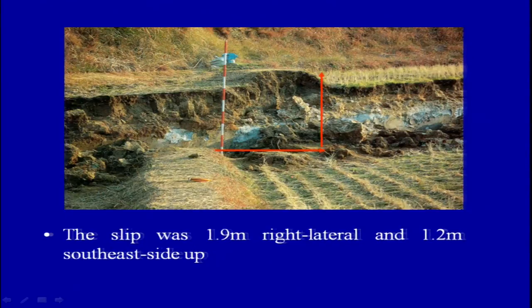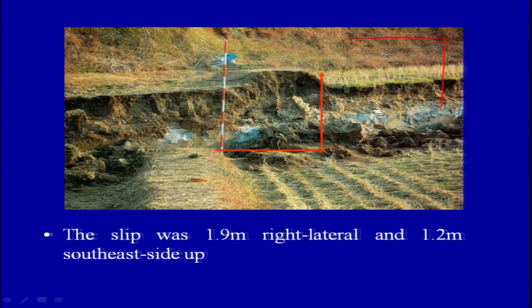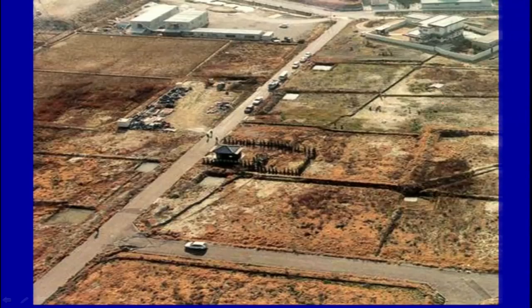Why is the identification of such faults important? Suppose you construct a structure on top of this fault when no fault trace had been identified. If an earthquake comes — which is very likely because these are active faults — then in future, if a structure is sitting on top of this fault line, it will experience severe damage. So we need to avoid such locations from constructing civil structures.